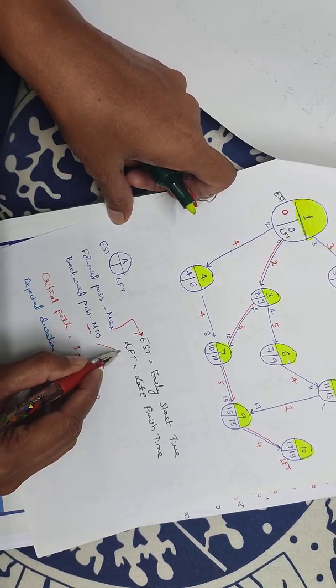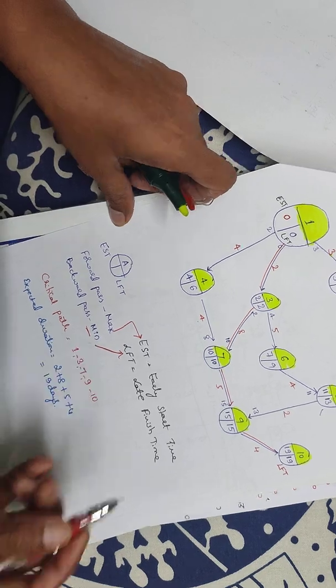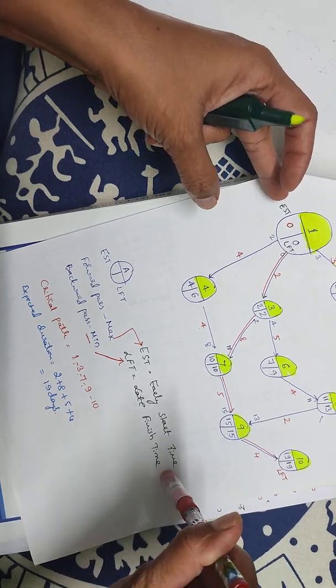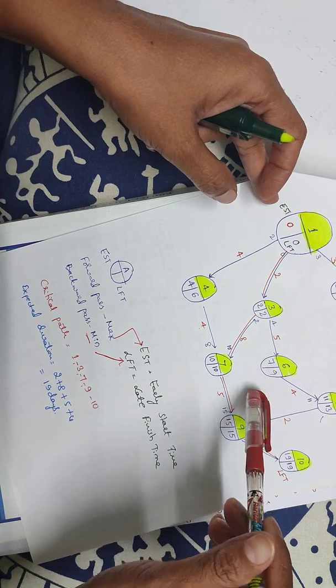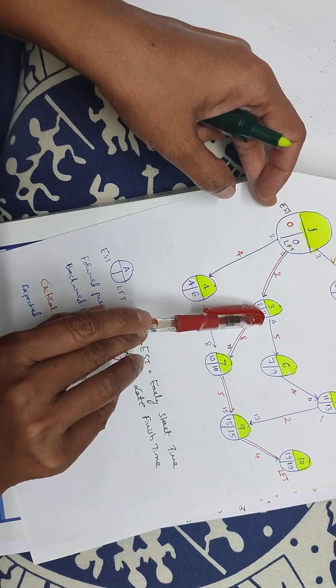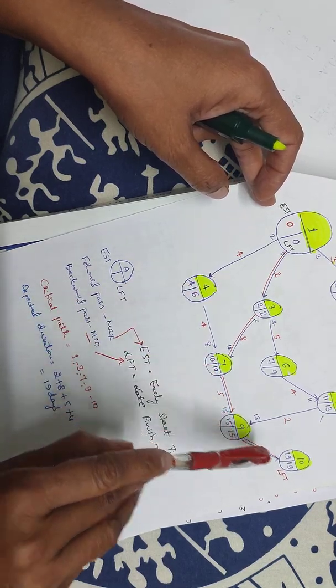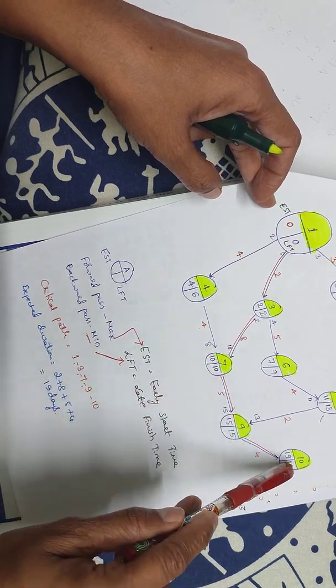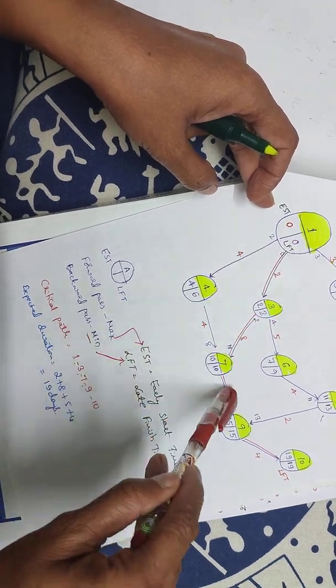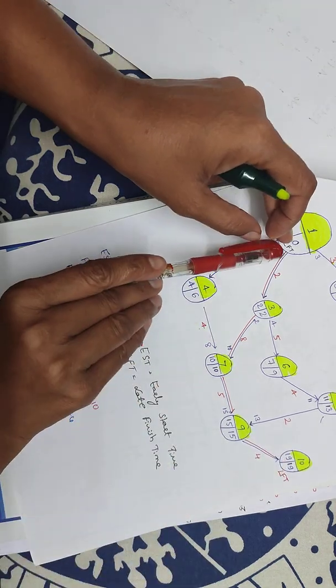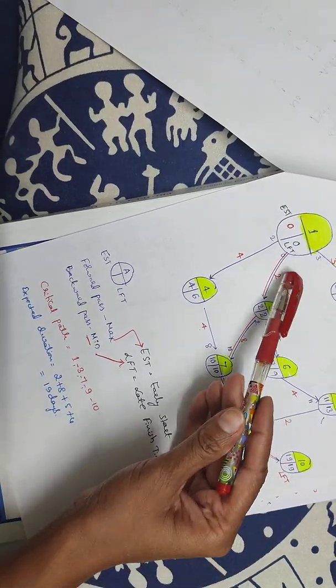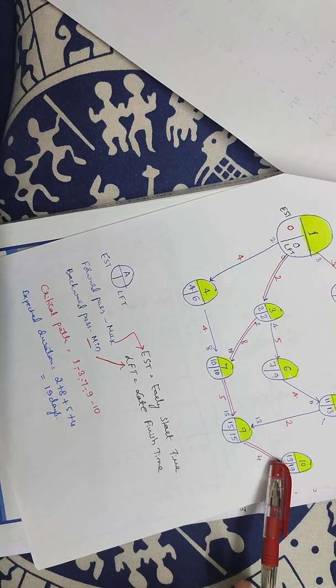Backward pass uses minimum value of late finish time. This is early start time and late finish time for the same activity. That is the critical path method. Where 0, 0; 2, 2; 10, 10; 15, 15; 19, 19. We consider this as the critical path where late finish time and early start time are the same, meaning the difference equals zero.